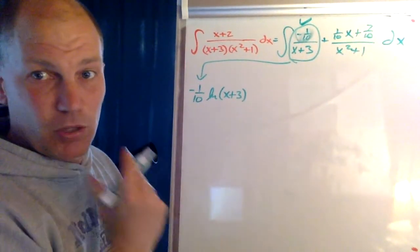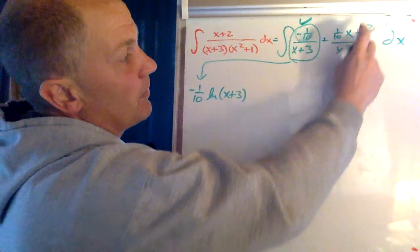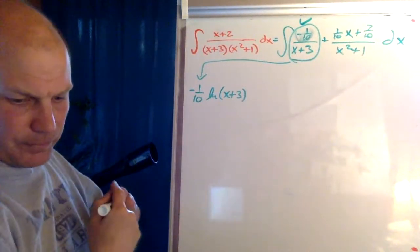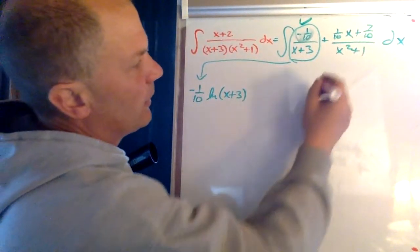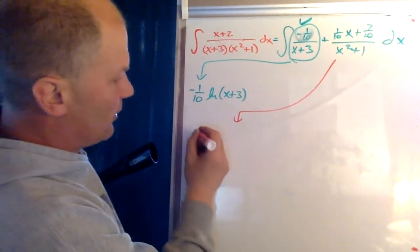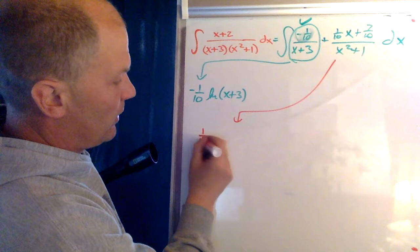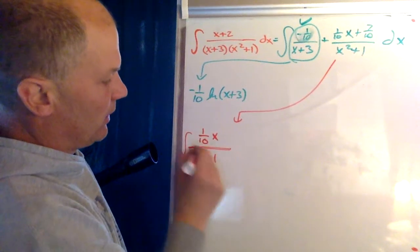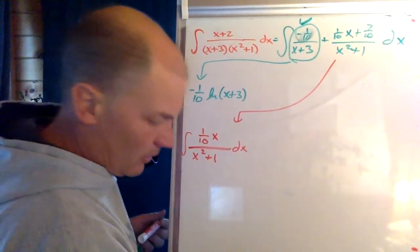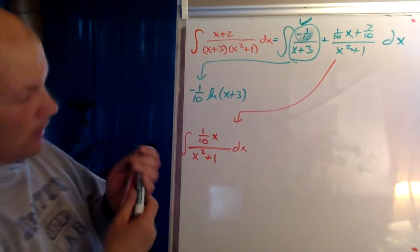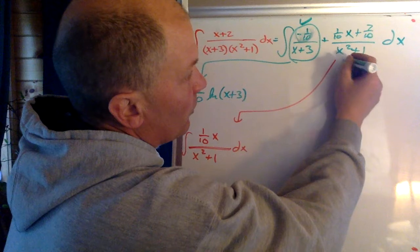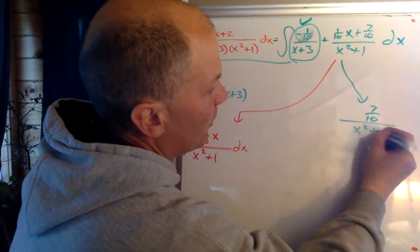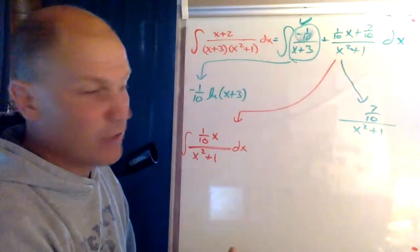This part is a little bit more complicated, and what we're going to do is we're going to break this up into two fractions. We're going to break this up, and I'm going to just kind of, maybe I'll color code this a little bit here. I'm going to break this up and say that this is going to be the integral one tenth x over x squared plus one. That's one integral that I need to solve. The other integral that I'm going to need to solve, I guess I'll do that in green over here, is going to be seven tenths over x squared plus one. Okay, so here are my two different integrals that I need to solve.